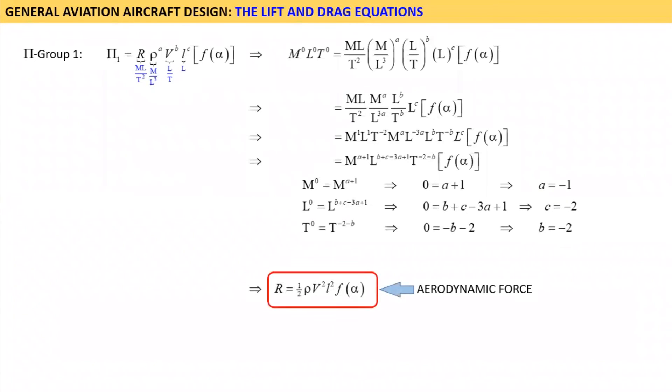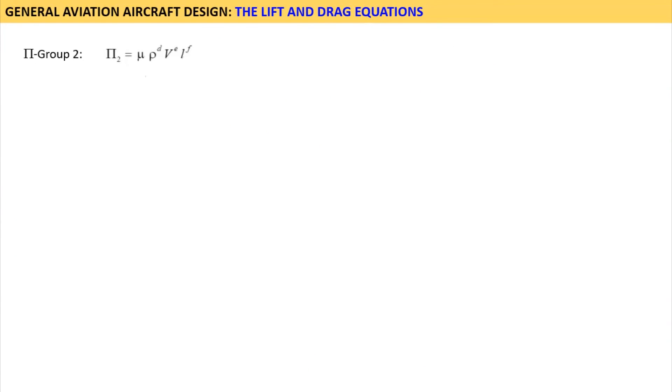Alrighty, now let's take care of the second pi group. It consists of the product mu times rho to the power D times V to the power E times L to the power F, where mu is written in terms of M divided by the product L times T, rho is M divided by L cubed, V is L divided by T, and L is capital L. Then, we proceed as we did before, by manipulating the quantities and the power to which they are raised. Then, solving for D, E and F leads to the values shown.